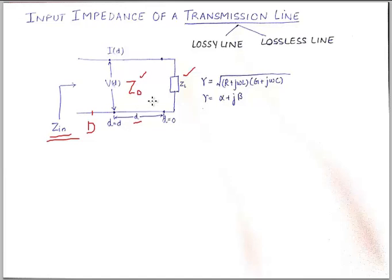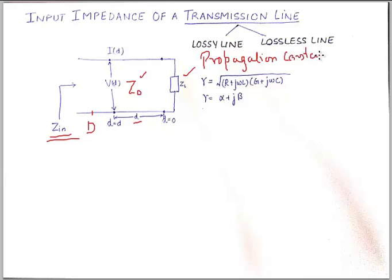Apart from Z0, there is one parameter known as gamma, the propagation constant. Propagation constant is alpha plus J beta — it consists of two parameters: the attenuation constant and the phase constant. You can calculate it from the distributed parameters as the square root of (R + jωL)(G + jωC).